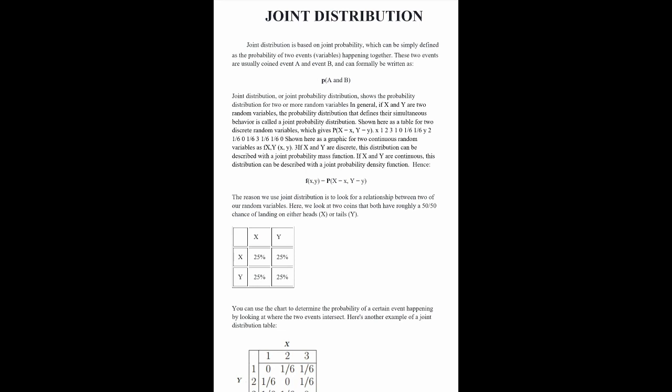Shown here as a graphic for two continuous random variables as F. If X and Y are discrete, this can be described with a joint probability mass function. If X and Y are continuous, this distribution can be described with a joint probability density function.